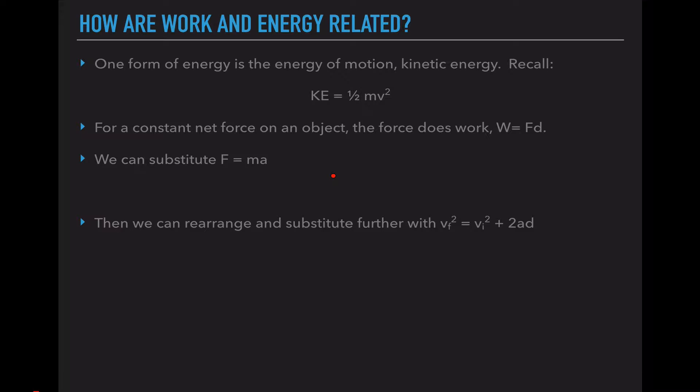When we see a constant net force acting on an object, that force does work and it gives us this equation we saw last video: work equals force times distance. The first substitution we're going to be doing is replacing force with mass times acceleration. So work equals mass times acceleration times distance.